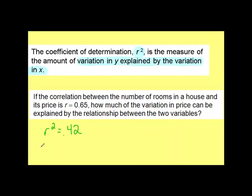This means the measure, 42%, of the amount of variation in Y. Well, which one's Y? Y happens second. Its price would come second.